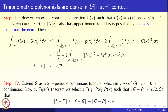Step 3: we define a continuous function G(x) such that G(x) = g(x) on the major part of the interval |x| ≤ π − δ — the large piece from −π + δ to π − δ. We also define G to be 0 at ±π.